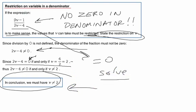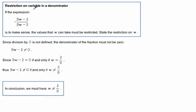Let's look at one more quick example. So here we've got this expression. We look at the denominator and we say, oh, 9w minus 2 can't be zero. So therefore, we solve 9w minus 2 equals zero.